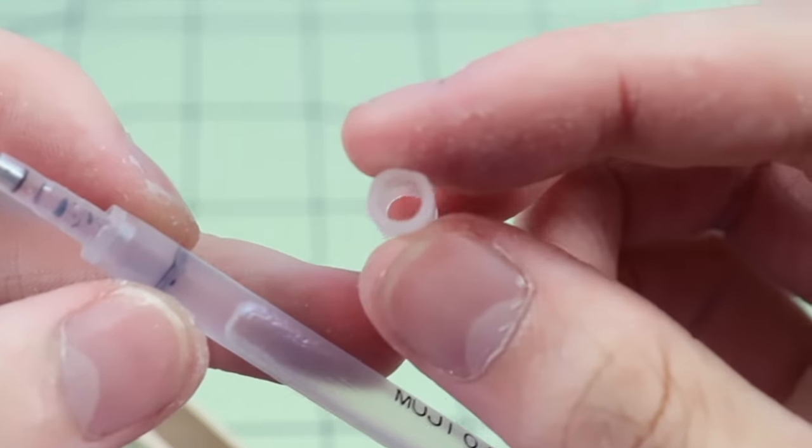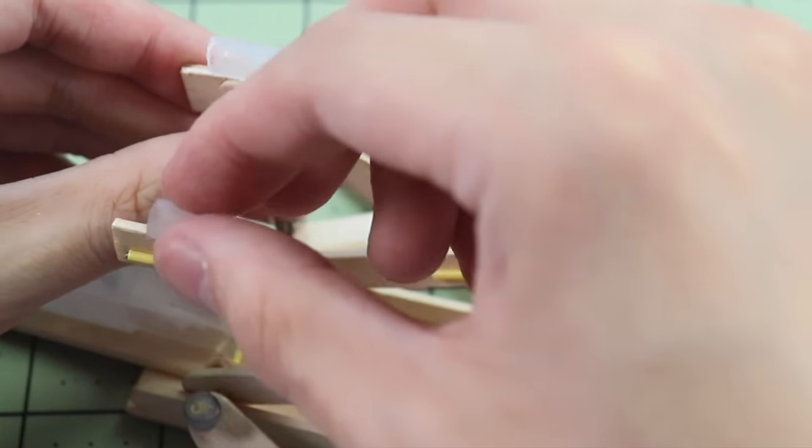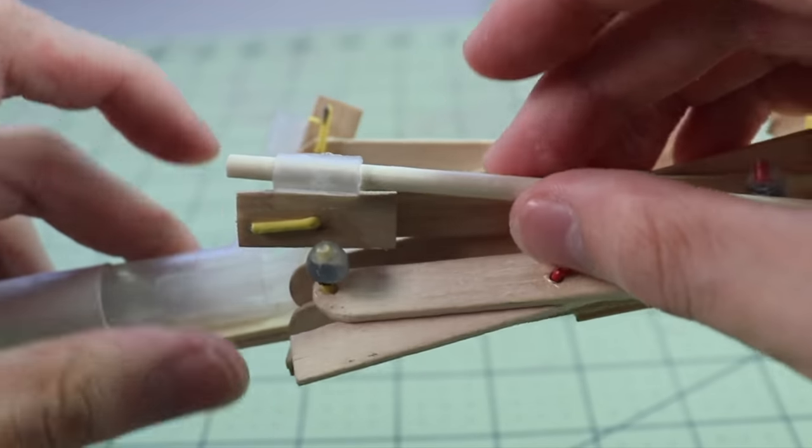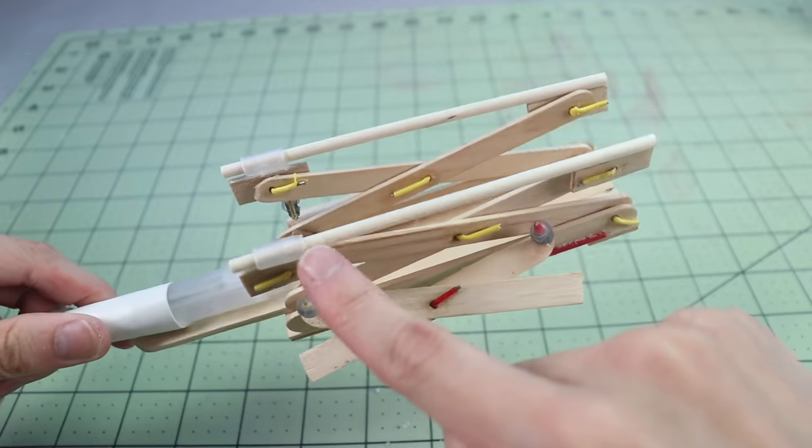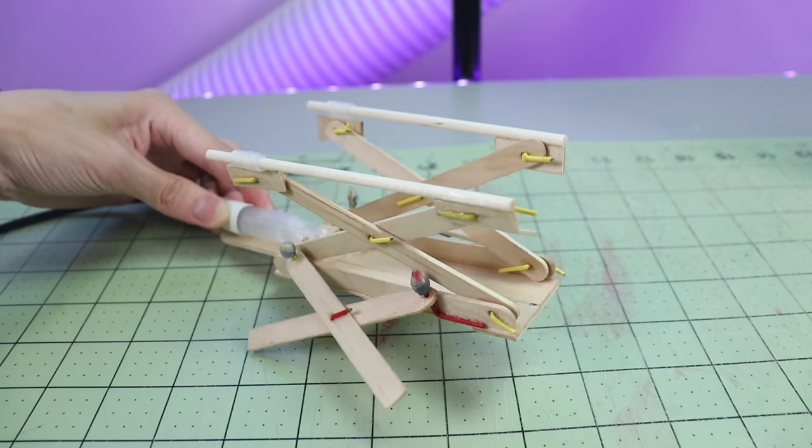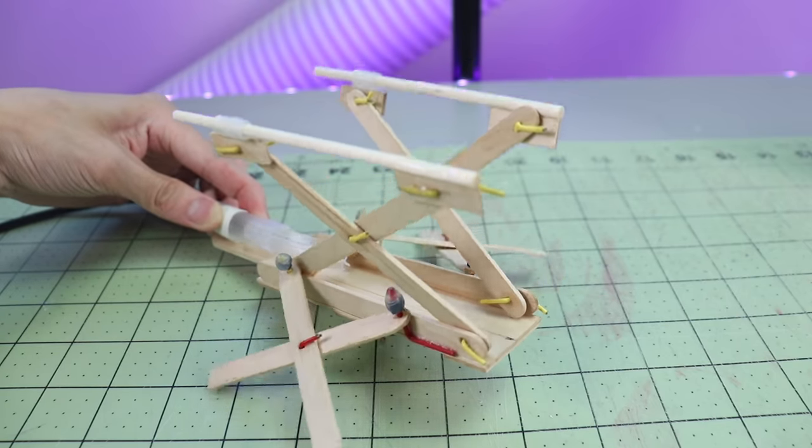If you don't have a pen cartridge tube like I do for this, you could just use a straw or roll up a paper tube or something. The purpose of this tube is so that we can feed this 1/8 inch dowel through there, and once you do this on both sides, it should look a little something like this.